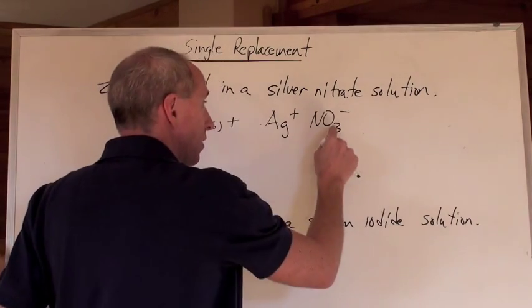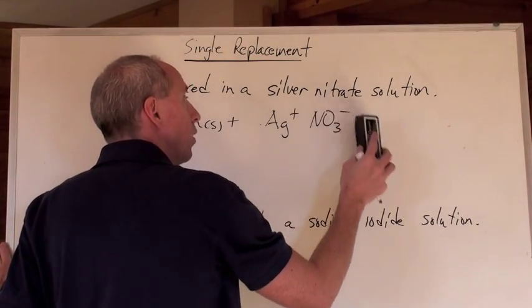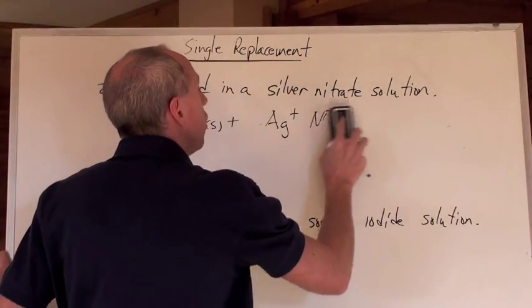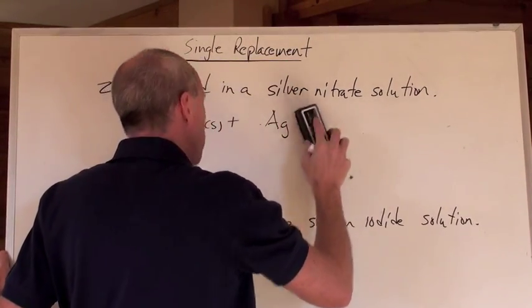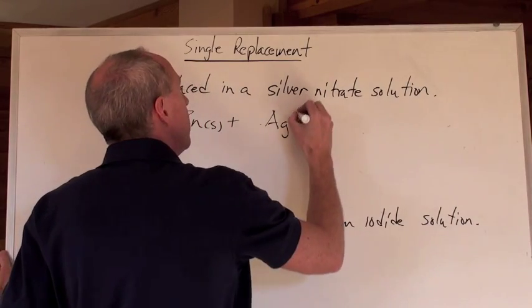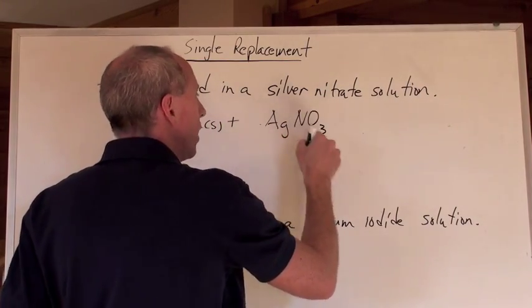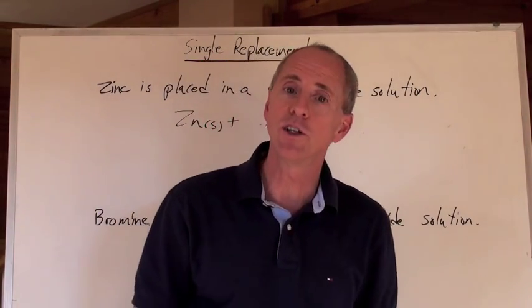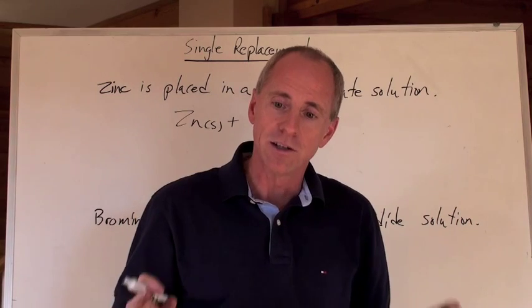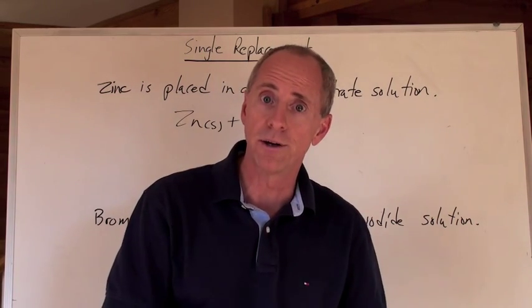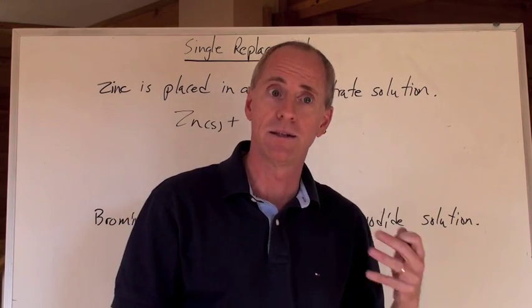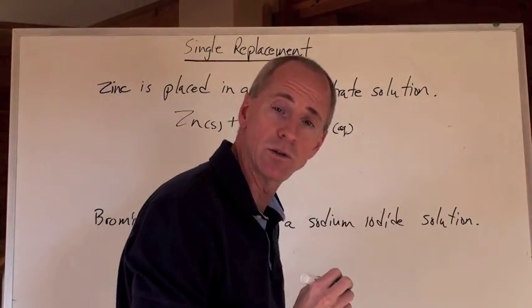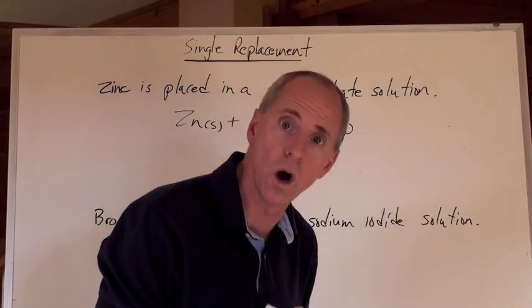Don't think that's a 3 negative charge — it's NO3 with a negative 1 charge. Sometimes there's a 2 negative or 3 negative, but not in this case. So positive 1 reacts with negative 1 and you get silver nitrate, AgNO3. It says it's a solution. When you see 'solution,' don't put liquid — solution means dissolved in water. So you put AQ, which is aqueous, meaning dissolved in water.